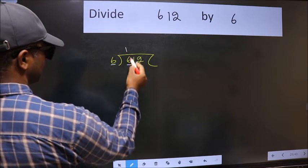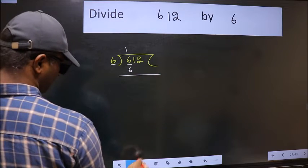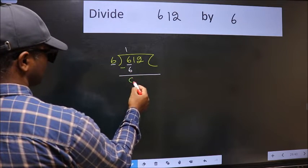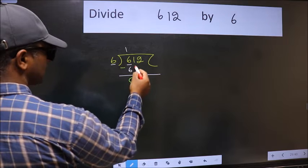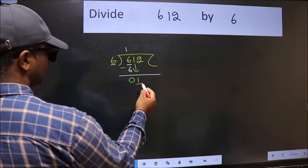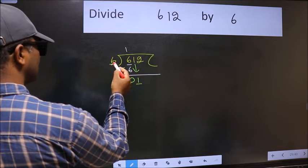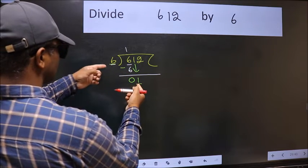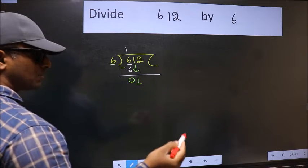Now we should subtract. We get zero. After this, bring down the beside number, so one down. Now here we have one and here six. One is smaller than six, so we should bring down.